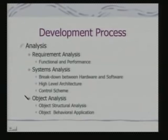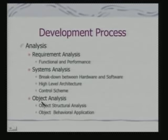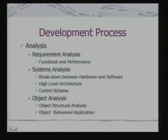What will be the development process? Since the application is a binding force, it has to start with requirement analysis, covering both functional as well as performance-related requirements. This should be followed by systems analysis, where we break down the requirements into hardware and software components, decide about the high-level architecture, and determine the overall control scheme. Following that, you can have an object-level analysis where each component identified at the architecture level translates to individual objects — these can be purely software objects or physical objects, and physical objects can have wrap-around software as well.